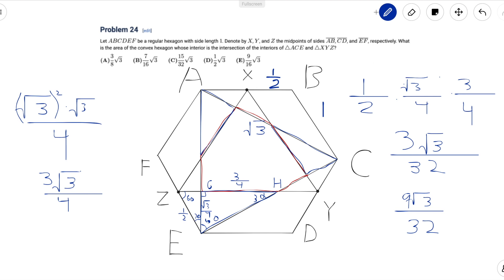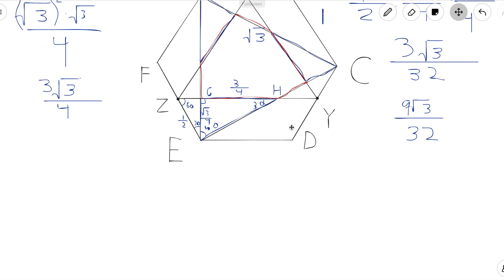Now we can just subtract the area 9 root 3 over 32 from 3 root 3 over 4. And after we put these fractions underneath a common denominator, we find that this is just 15 root 3 over 32.